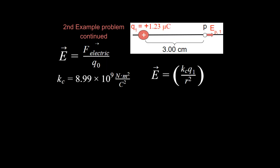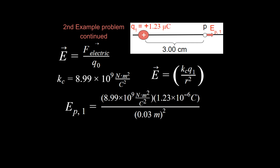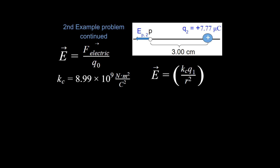Continuing with the problem — we have a charge and a distance. Are we given or asked for a force? No. So don't use the force version of the equation; use E = kQ/r². Coulomb's constant k is normally rounded to 9.0 times 10 to the ninth. We know Q1 and r squared, so we plug in our numbers and solve. The electric field at that point from charge 1 equals 1.23 times 10 to the seventh newtons per coulomb.